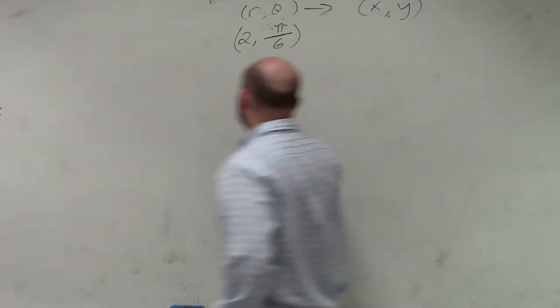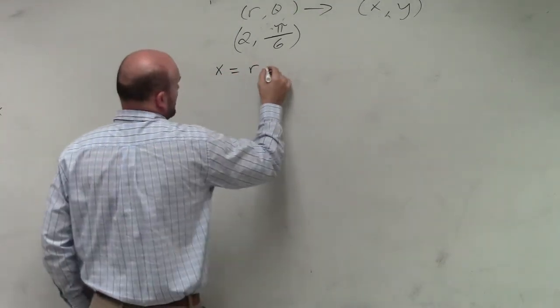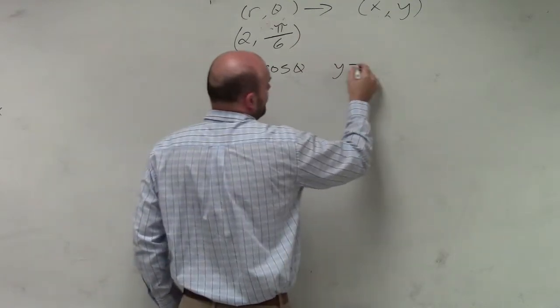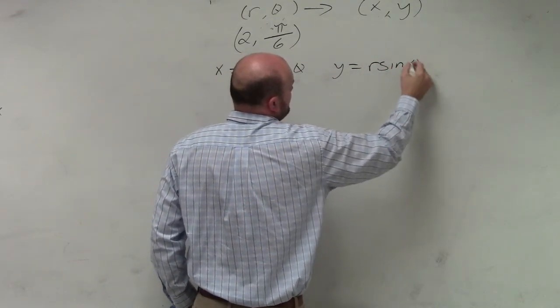So all we really simply need to know is x equals r times cosine of theta, y equals r times sine of theta.